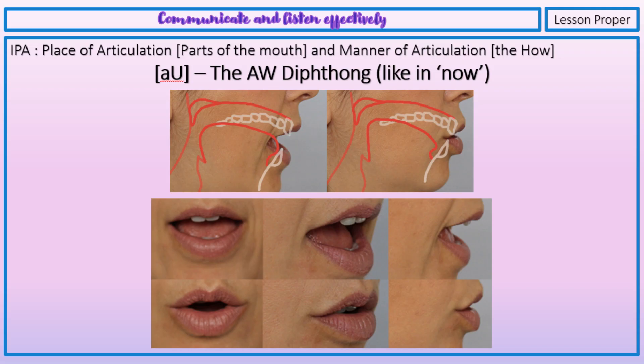Ow — say that with me: ow. This sound occurs in the words town, round, bow. Wow.